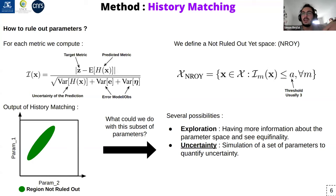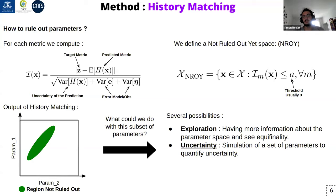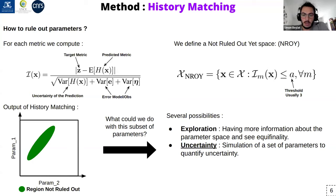This is called a wave, and you can run several waves to progressively reduce your parameter space. At the end you do not have one set of parameters but a sub-region where you should find all sets of parameters that give consistent simulations given your observations. This is really useful to explore the parameter space, to see equifinality, and also to quantify uncertainty, as you can select several sets of parameters and see how they evolve in the future.